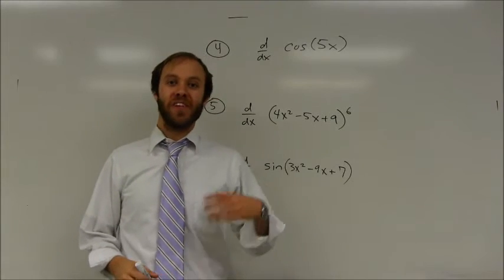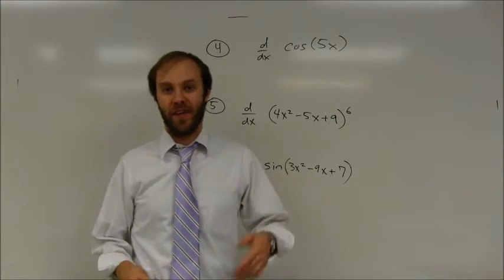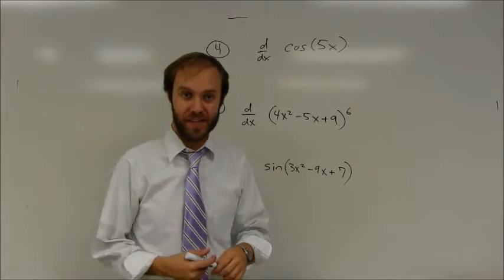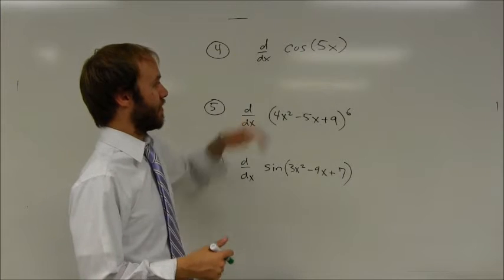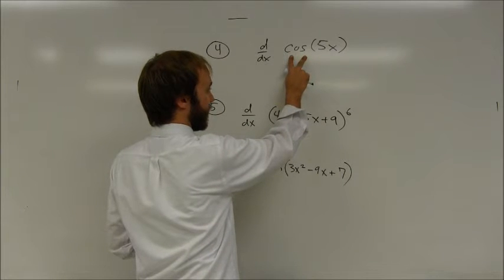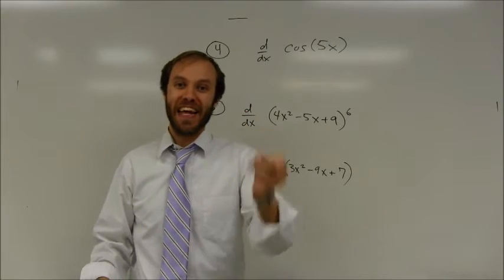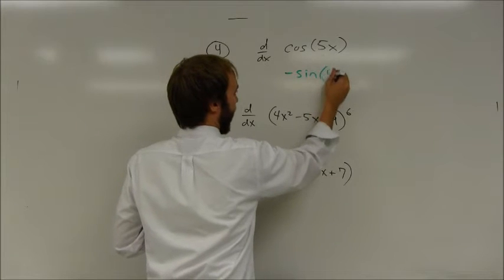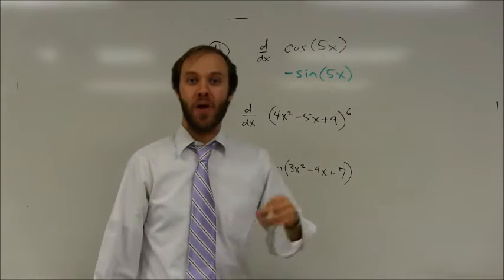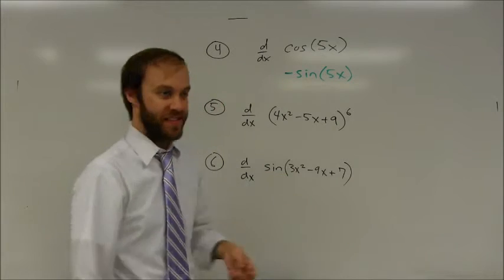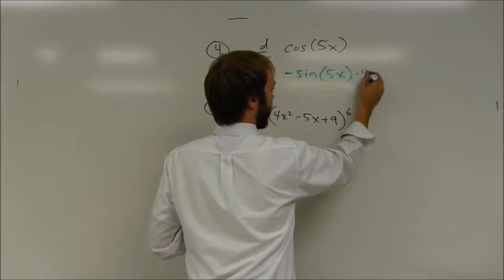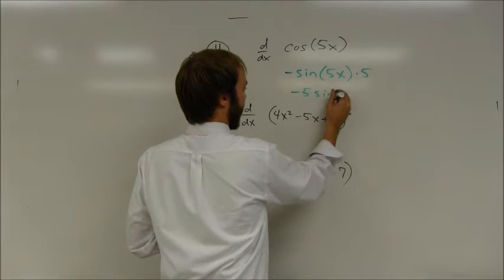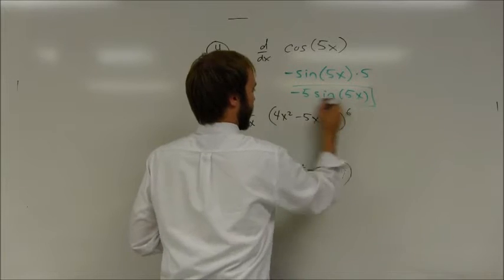Continuing with problem number 4. You'll see once again I have a composite function — I have the cosine of 5x. When I take the derivative, I'm going to have to multiply by the derivative of the inside function. I take the derivative of my outside function: derivative of cosine of x — be careful — it's going to be negative sine of the same thing, so negative sine of 5x. Only thing I need to do is multiply by the derivative of 5x, which is 5. I can write this as negative 5 times sine of 5x, and at that point I'm done.